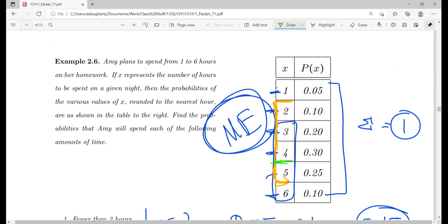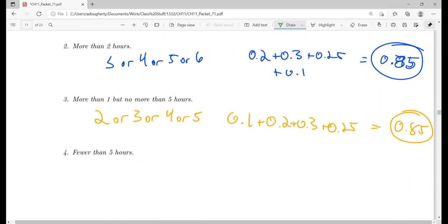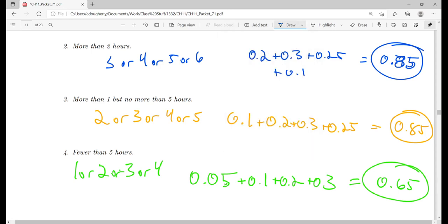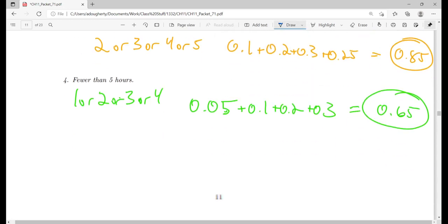That puts my cutoff here at fewer than 5. So we're saying, what's the probability she spends 1 or 2 or 3 or 4 hours? 0.05 plus 0.1 plus 0.2 plus 0.3, 0.65. There's like a 65% chance she spends less than 5 hours on her homework. So we can answer a few different types of probability questions, being able to read tables, being able to know how to interpret ORs and NOTs and the like.